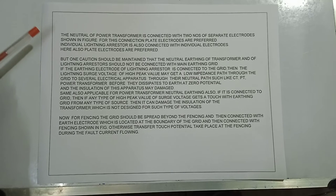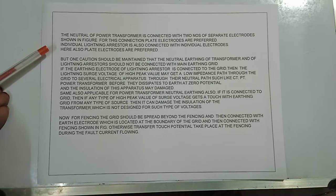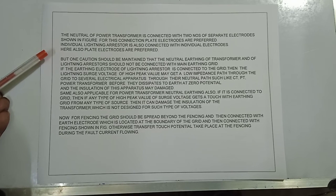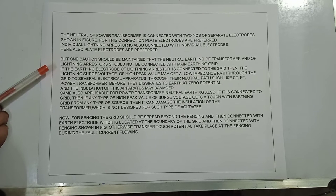The neutral of the power transformer is connected with two numbers of separate electrodes. For this connection, plate electrodes are preferred. Individual lightning arrestors are also connected with individual electrodes, and plate electrodes are preferred here as well. One important rule: the neutral earthing of the transformer and the lightning arrestors should not be connected with the main earthing grid.